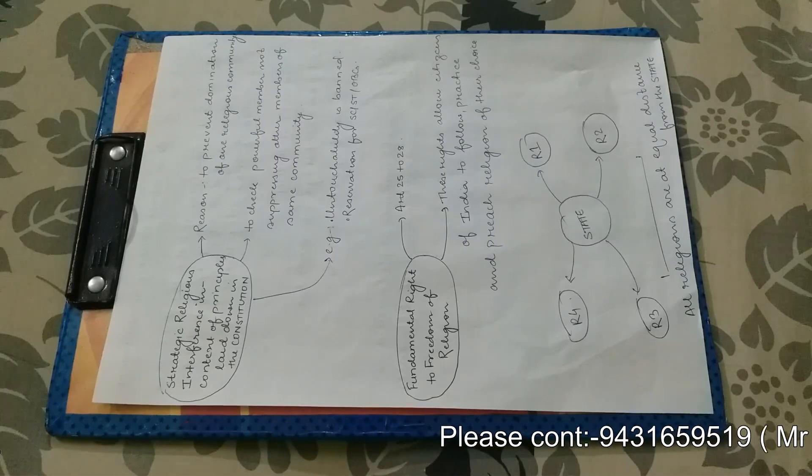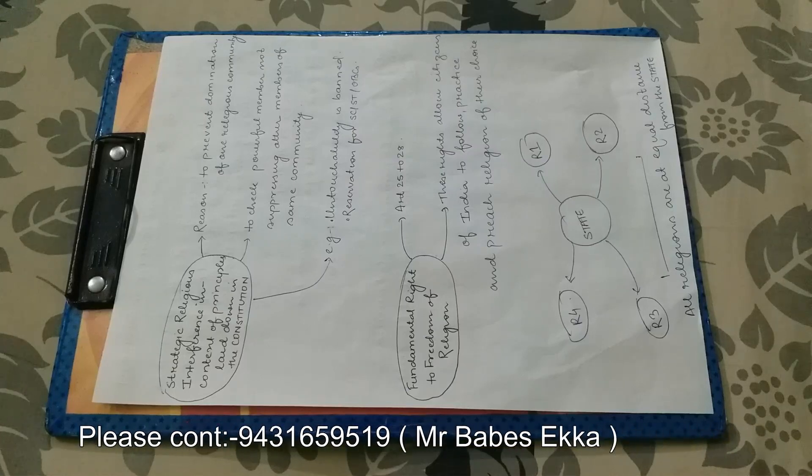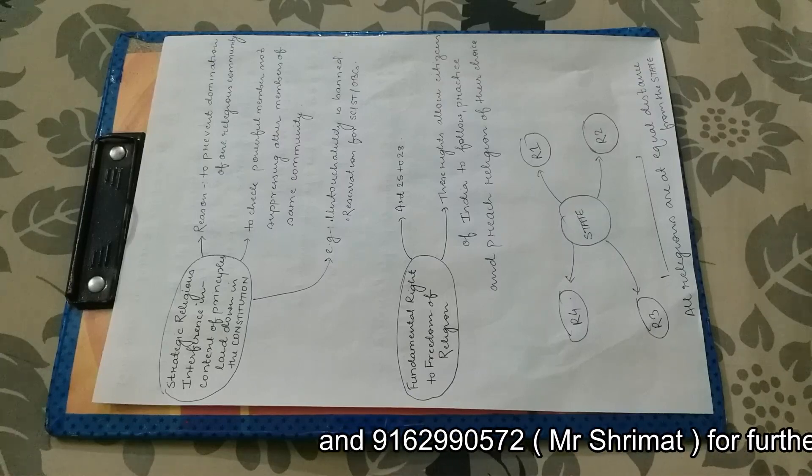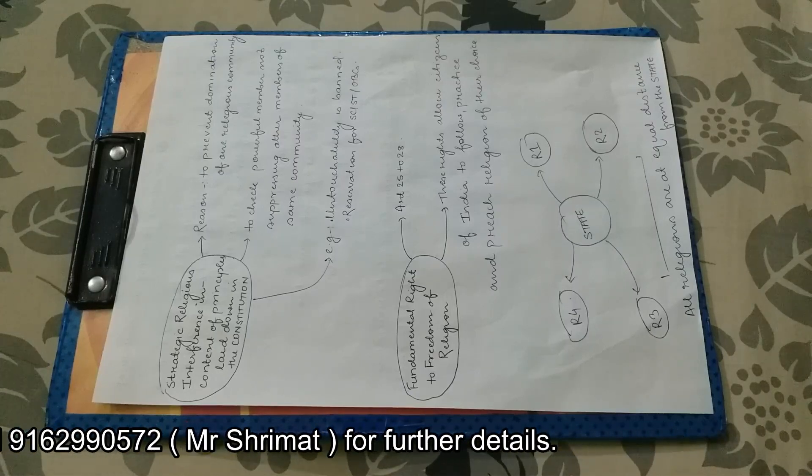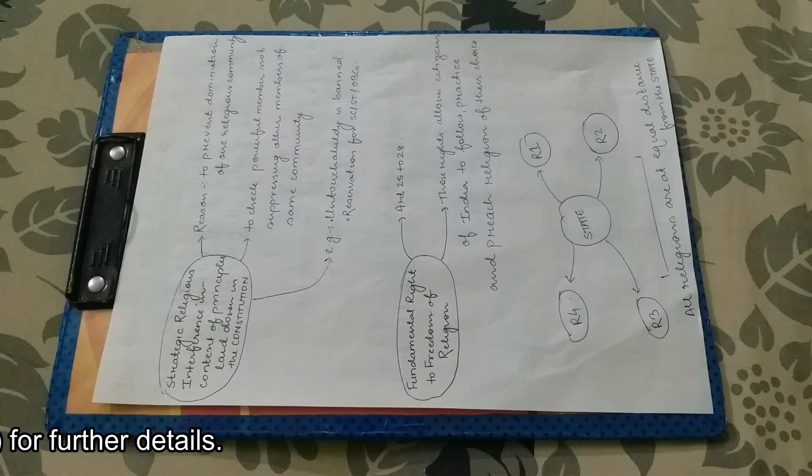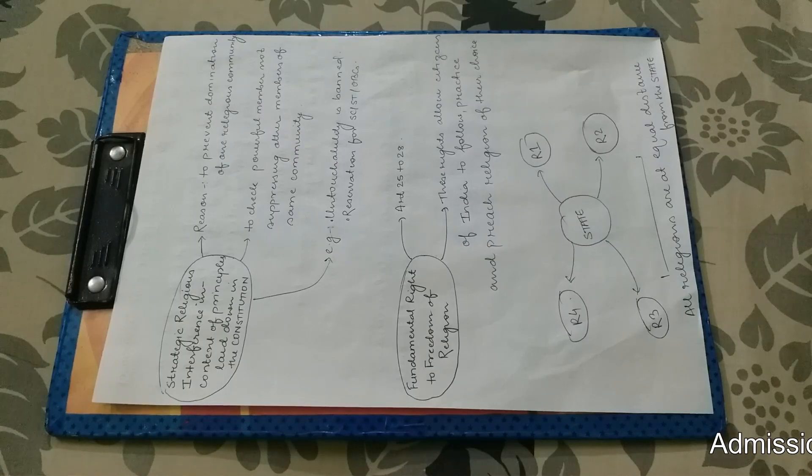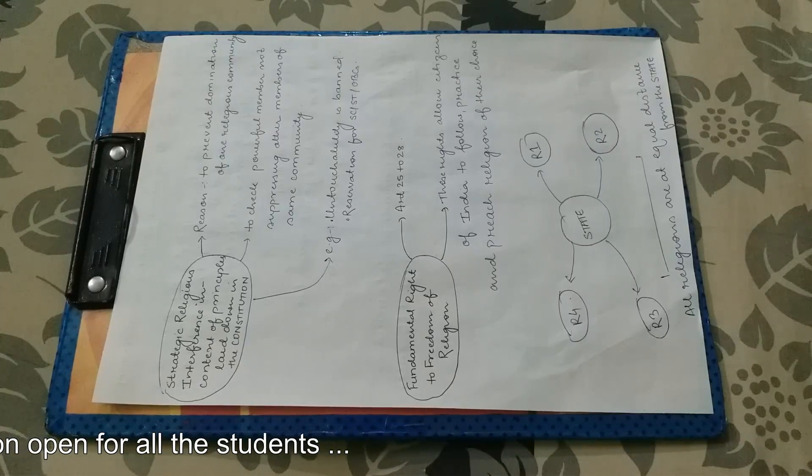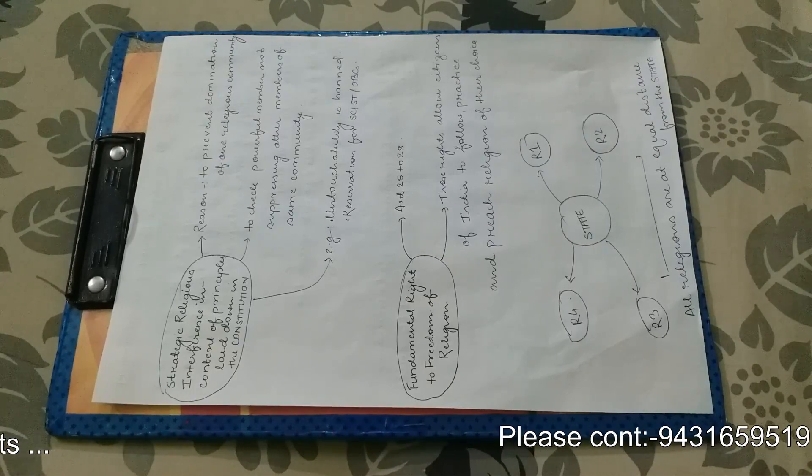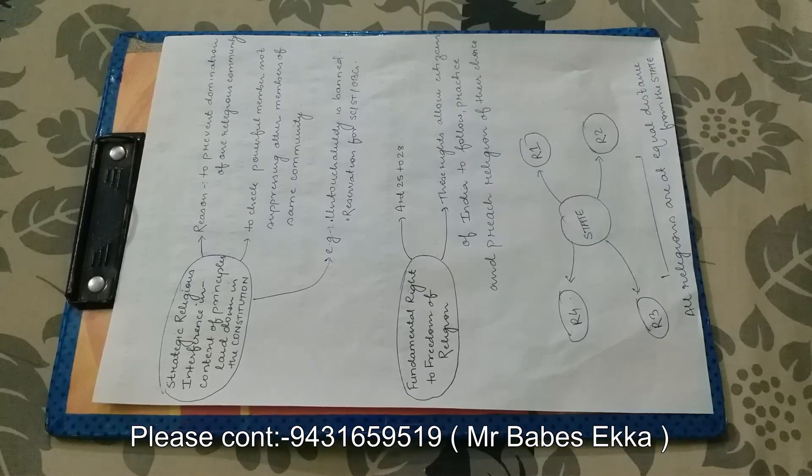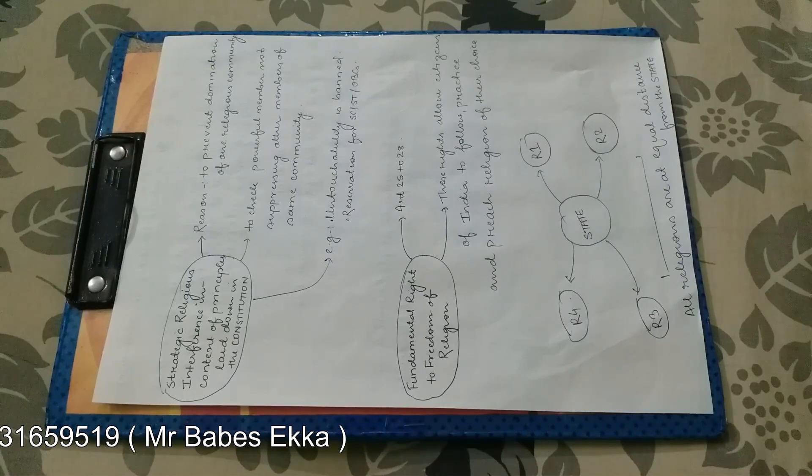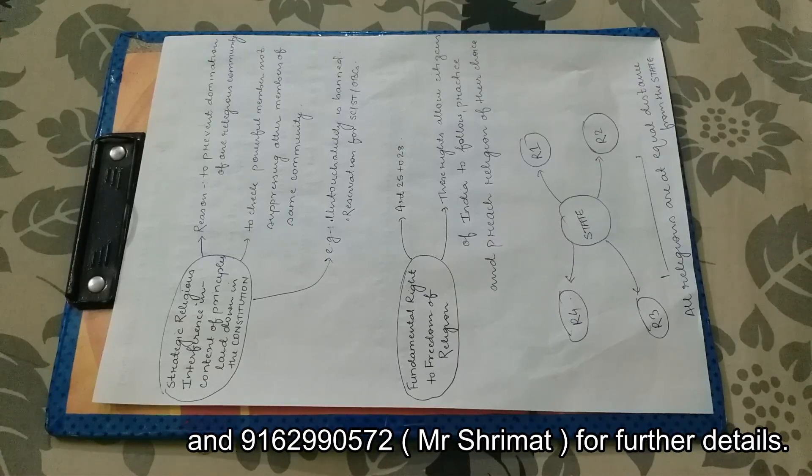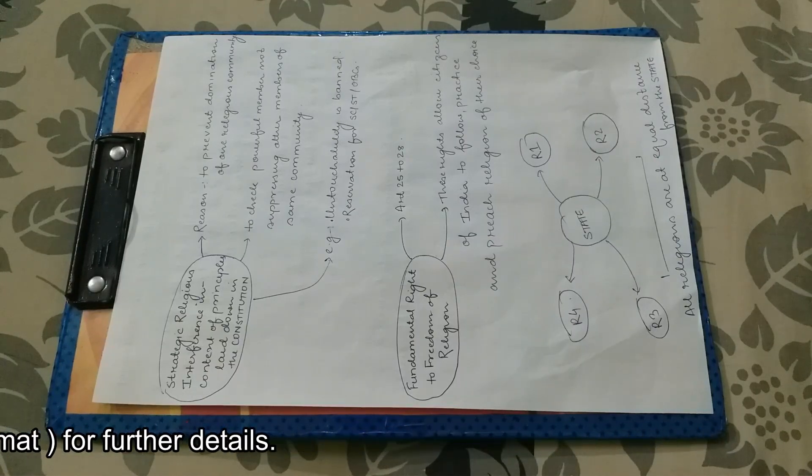Now, the next one is the fundamental right to freedom of religion, that is article 25 to 28. These rights allow citizens of India to follow, practice and preach religion of their choice. So individuals have right to choose their religion and they can practice their religion and they can propagate their religion without any interference from the state. Sometimes there could be some strategic interference because it might violate the principle of our constitution.